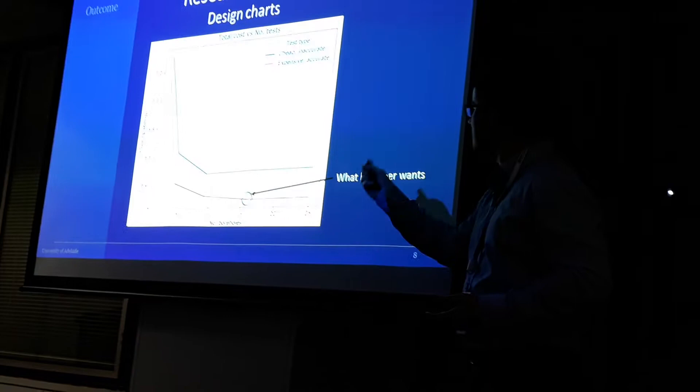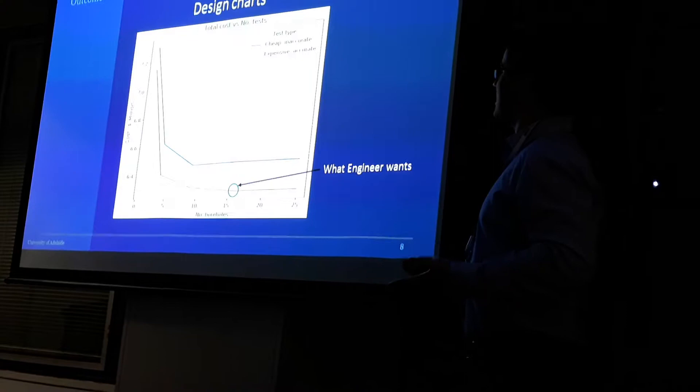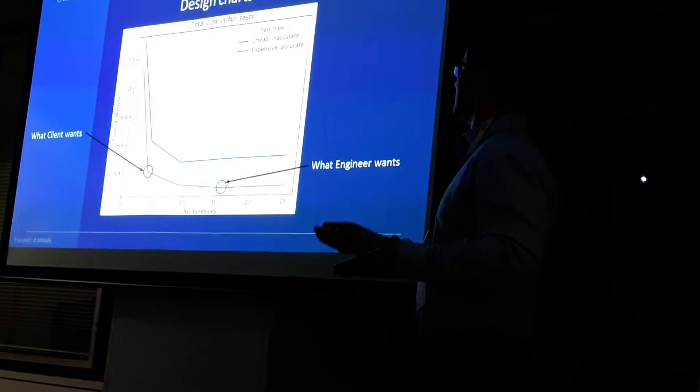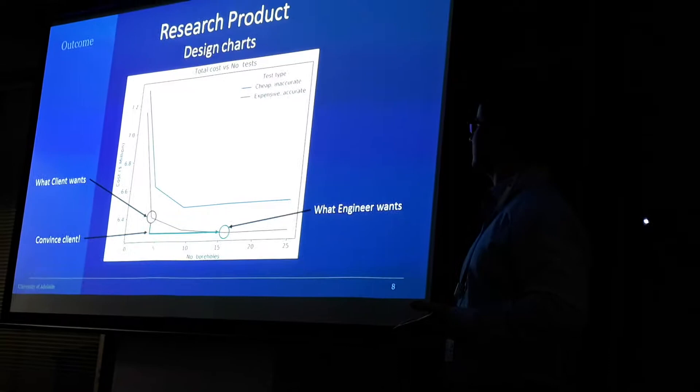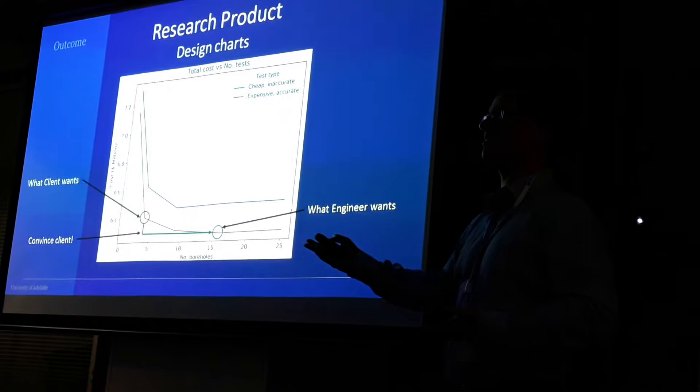But the problem is clients like to minimize costs. So they might want to do something more like four boreholes, which, as you can see, isn't as good. So the engineer can then show the client this chart and say, well, hold on. If you spend another $10,000, $20,000 or so, you can actually save about $100,000. So this will help persuade the client to save the client some money, while at the same time reducing risk, which is absolutely fantastic.